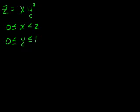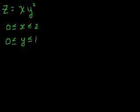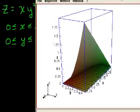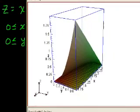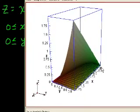And let's see what that looks like, just so we have a good visualization of it. So I graphed it here, and we can rotate around. This is z equals xy squared. And this is the bounding box, right? x goes from 0 to 2, y goes from 0 to 1.